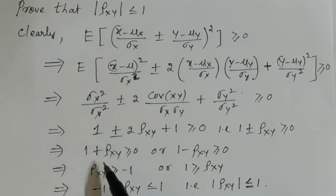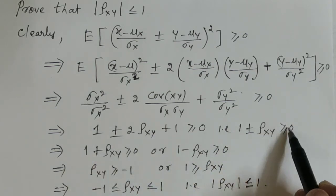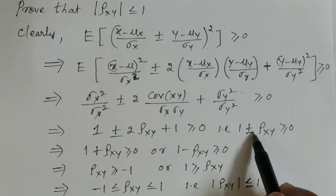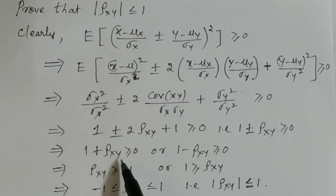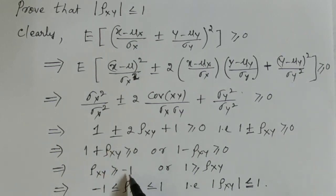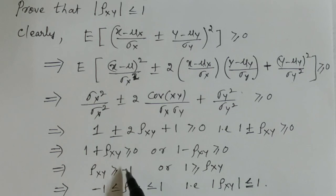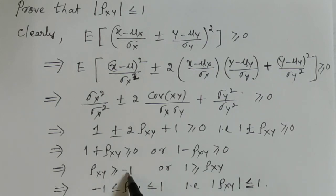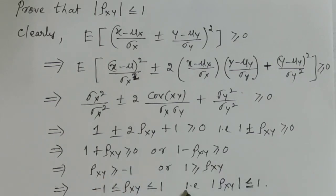From 1 + ρ_{XY} ≥ 0 we get ρ_{XY} ≥ −1, and from 1 − ρ_{XY} ≥ 0 we get ρ_{XY} ≤ 1. Combining these two results: −1 ≤ ρ_{XY} ≤ 1, which means the modulus or absolute value of ρ_{XY} is less than or equal to 1.